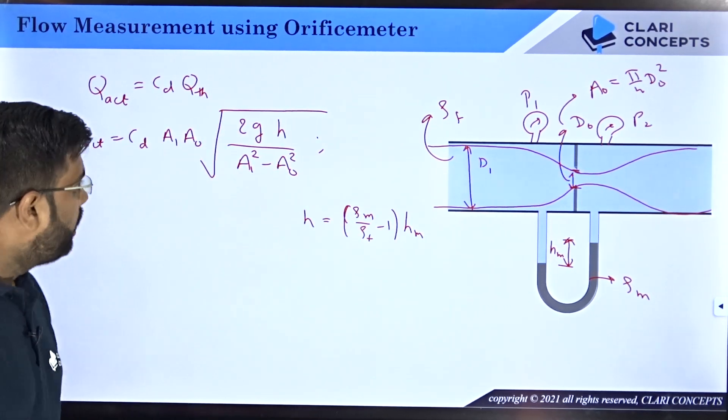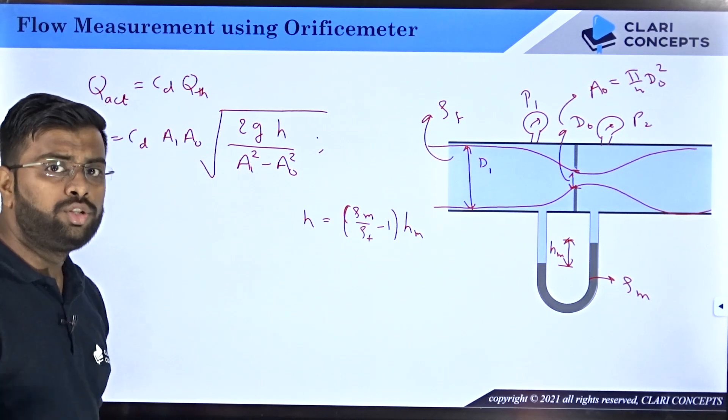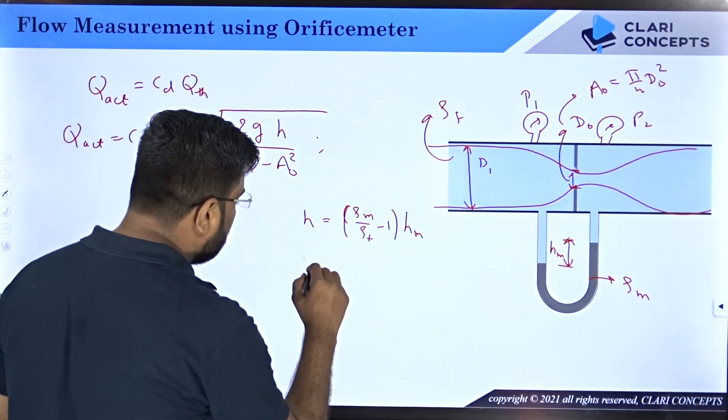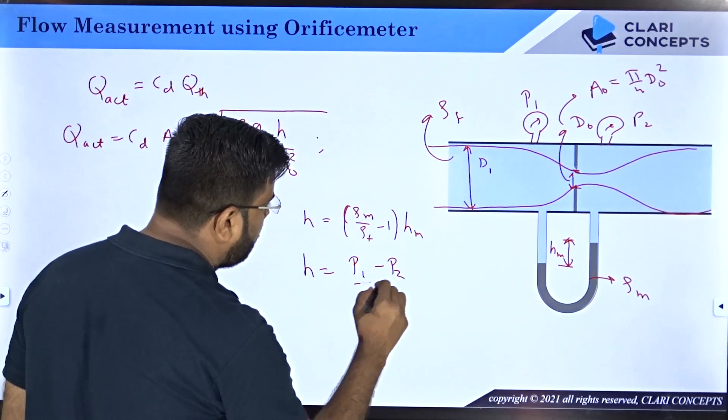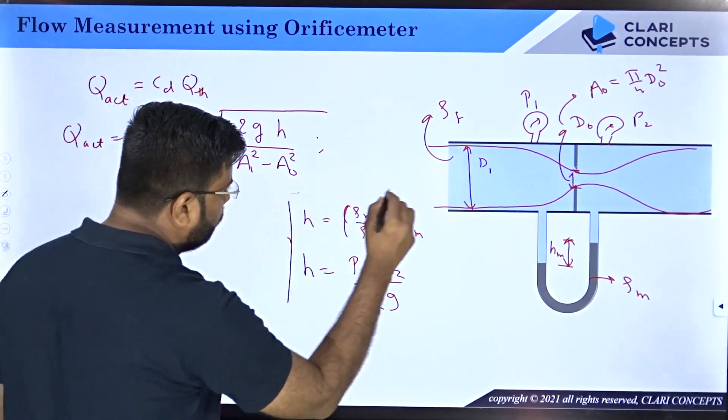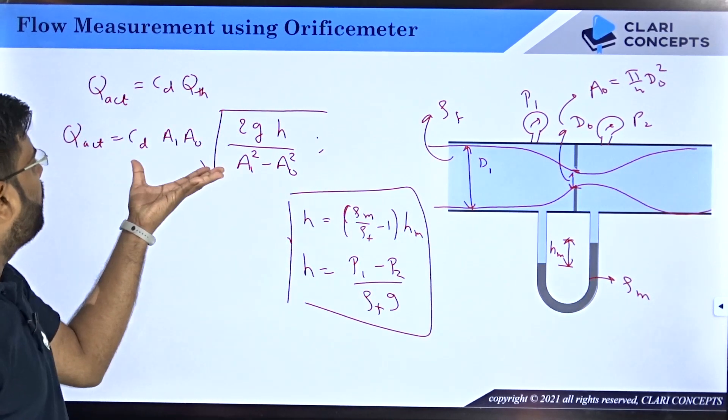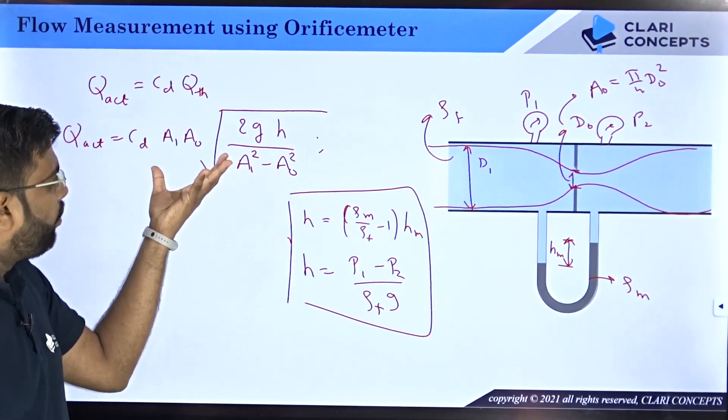The only change you will have to do is in h, which we already saw in case of venturimeter's lecture. h will become p_1 minus p_2 divided by ρ_f g, which is basically the pressure head. Both of them are correct.